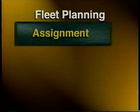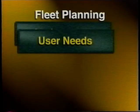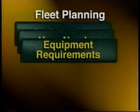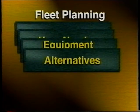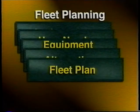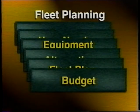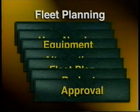There are seven basic steps in the fleet planning process: 1. Establish assignment and utilization policies and procedures. 2. Define individual user needs. 3. Develop total equipment requirements. 4. Define and analyze alternatives. 5. Develop a comprehensive fleet plan. 6. Incorporate the fleet plan within the overall fleet budget. 7. Obtain approval of the fleet plan and budget.